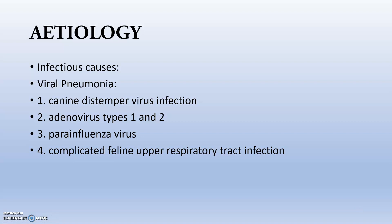Infectious causes include viral pneumonia. Canine distemper virus causes severe interstitial pneumonia and bronchopneumonia in dogs. Canine adenovirus type 1 and type 2 can cause infectious canine hepatitis, with animals showing transient fever, cough, and dyspnea. Parainfluenza virus attacks the bronchus and produces bronchopneumonia. In felines, the upper respiratory tract is more prone to infectious agents, especially in immunocompromised animals where defense mechanisms are weakened.